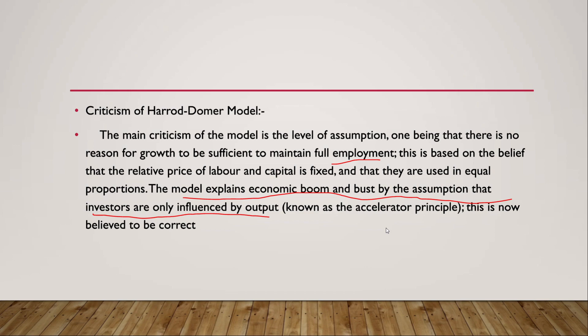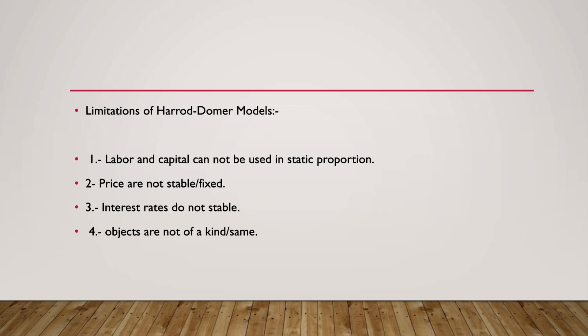The model is based on investors' thoughts about output. This is known as the accelerator principle, and this is now believed to be correct. As for the limitations, the Harrod-Domar model is limited by the fact that capital and labour cannot be used in static proportions.